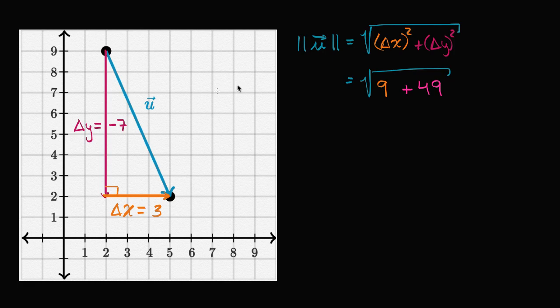You could view this as our change in y squared, which is negative seven squared, or you could just look at the absolute value—the length of the side. We don't think of a side as having a negative value; the negative just says we're going from top to bottom, giving us direction. But the length is seven, and using the Pythagorean Theorem, seven squared is also 49.